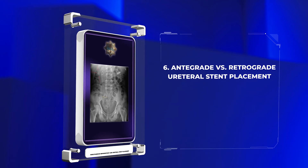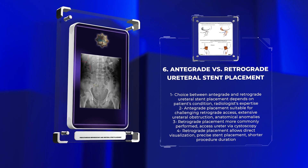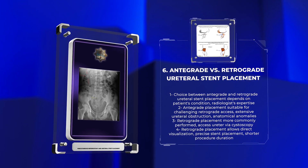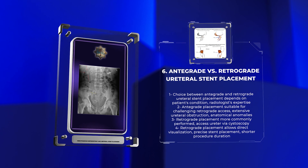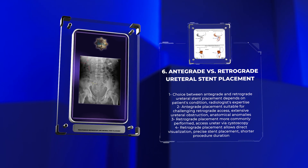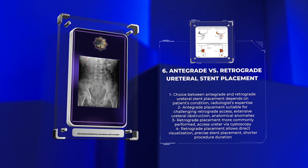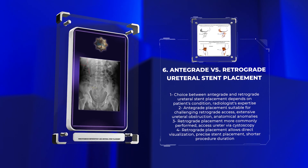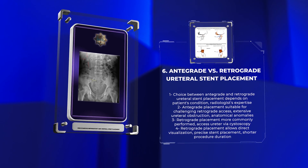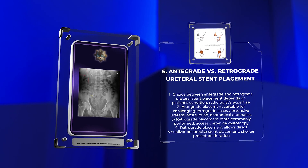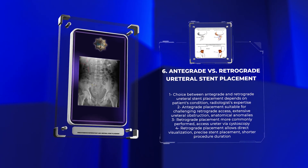The choice between antegrade and retrograde ureteral stent placement depends on the patient's specific condition and the interventional radiologist's expertise. Antegrade stent placement is suitable for cases where retrograde access to the ureter is challenging or impossible due to extensive ureteral obstruction or anatomical anomalies. Retrograde stent placement is more commonly performed and involves accessing the ureter via cystoscopy. This method allows for direct visualization of the ureteral orifice, precise stent placement, and shorter procedure duration.